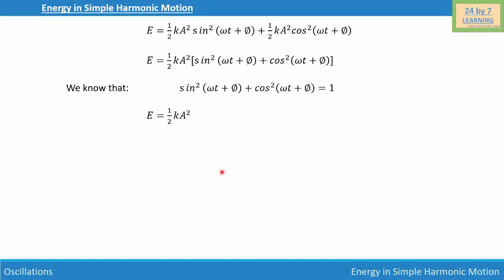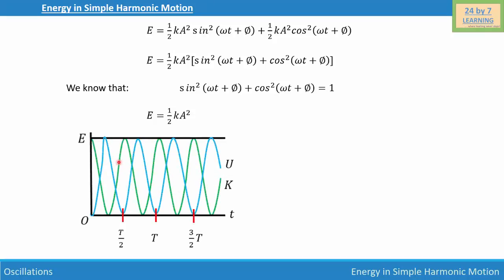Now let's graph the potential energy and kinetic energy together with the total energy. We get a graph where the blue line is the potential energy, the green line is the kinetic energy, and a horizontal line represents the total energy of the particle executing simple harmonic motion.